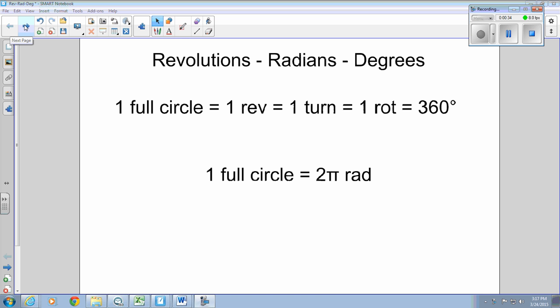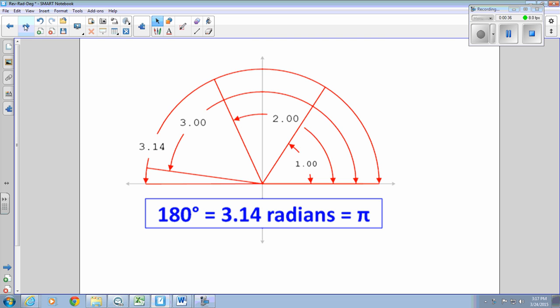And before we go any further, let's understand what a radian is. Basically, what a radian is, is it's a measurement of the arc of a circle and how many radiuses long it is. If this black line here is the radius of a circle,